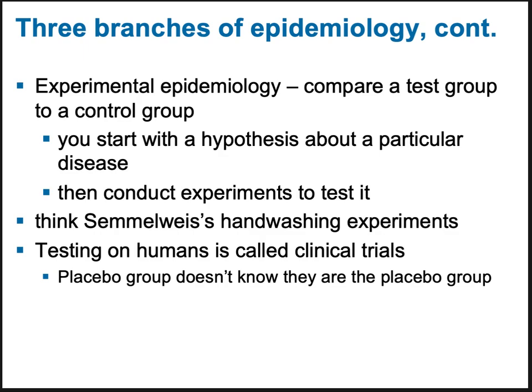When we test on humans, it's called clinical trials, and we use a placebo group. In a double-blind study, neither the patients nor the clinicians know who is receiving the placebo treatment, which helps prevent any cues or different treatment being given — because neither side knows who's receiving what.